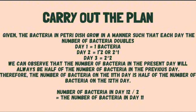The given is that the bacteria in the petri dish grow such that each day the number of bacteria doubles. So we can say that on the first day we have only one bacteria. On the second day the bacteria doubles, so the one bacteria will be squared, or we can say two over one — either way it becomes two bacteria. On the third day, the two bacteria doubles, so we can say it is two squared, which is four bacteria. We can observe that the number of bacteria in the present day will always be half of the number of bacteria in the next day. Therefore, the number of bacteria on the eleventh day is half of the number of bacteria on the twelfth day. So the number of bacteria in day twelve divided by two equals the number of bacteria in day eleven.